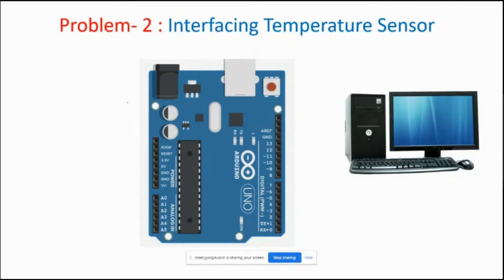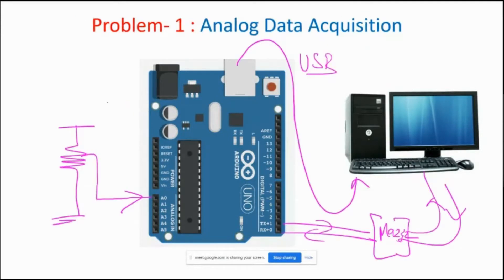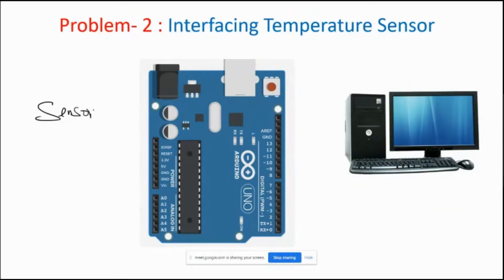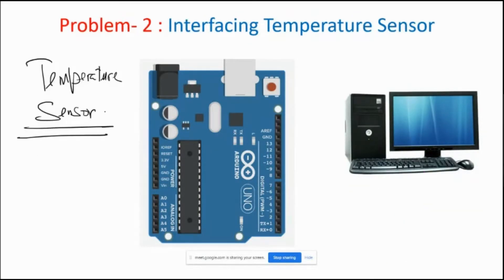Problem 2: now let us replace the potentiometer with a sensor — we are eliminating it with a sensor. What sensor? A temperature sensor. Which exact temperature sensor? We are using the TMP36 temperature sensor.